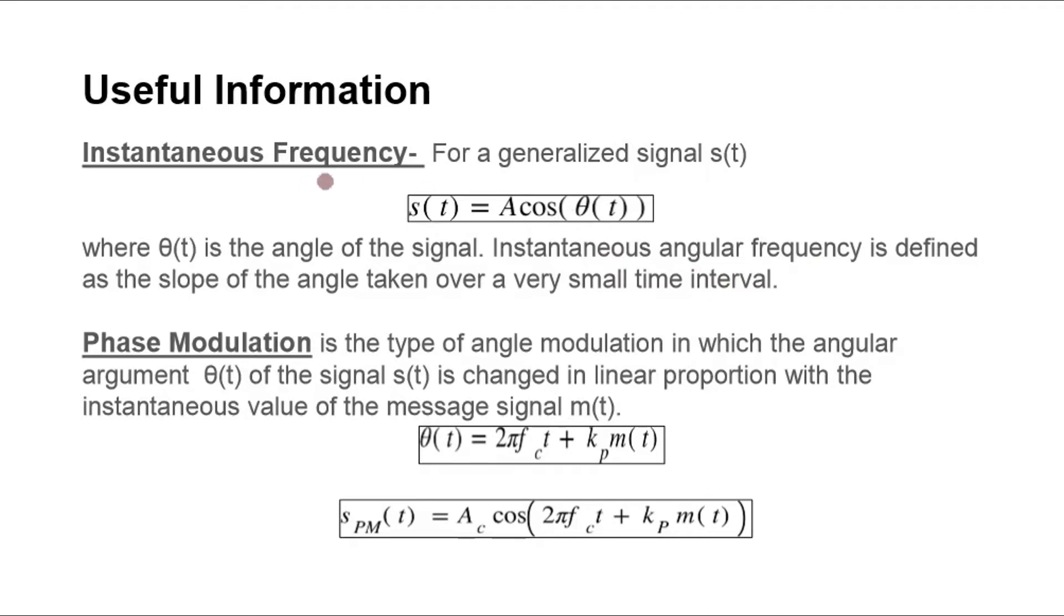Phase modulation is the type of angle modulation in which the angular argument θ(t) of the signal s(t) is changed in linear proportion with the instantaneous value of the message signal m(t). As m(t) varies, θ(t) also varies, and so the phase angle of the signal varies.